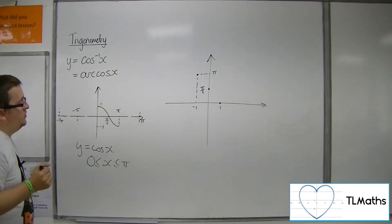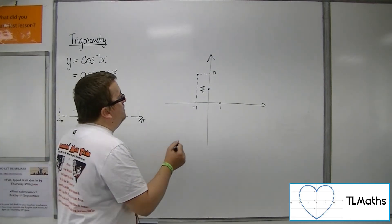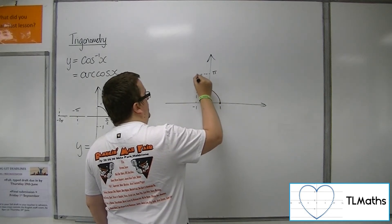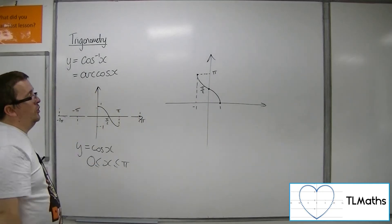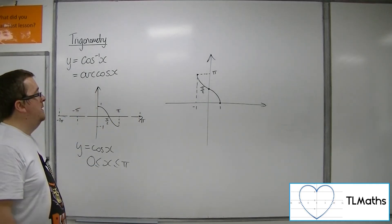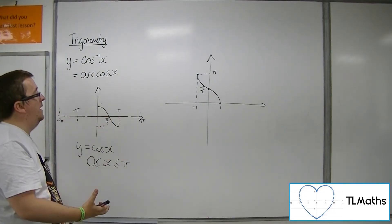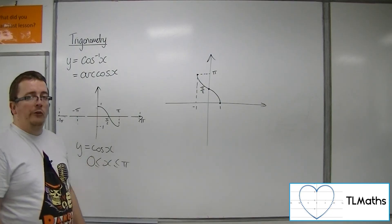OK, so then it's just a case of making sure you get the shape of the curve right. So then it's going to go this way around, OK, and there is the shape of arccos x, OK, that's what it looks like, and that's how we can build it from the restricted domain version of cos x.